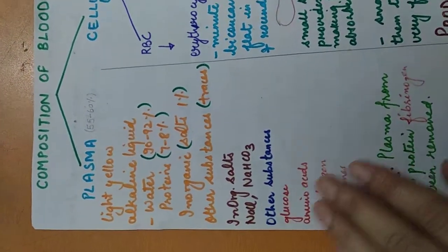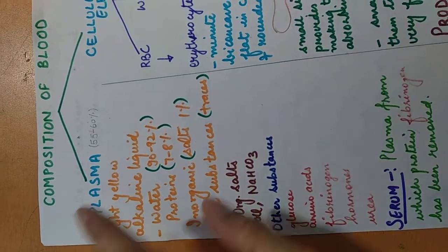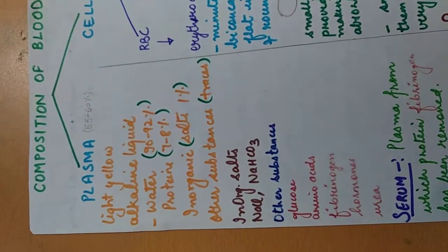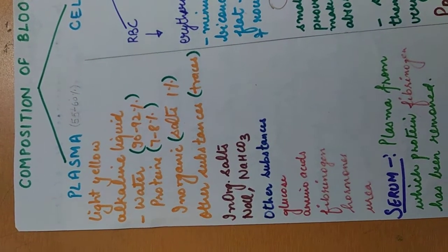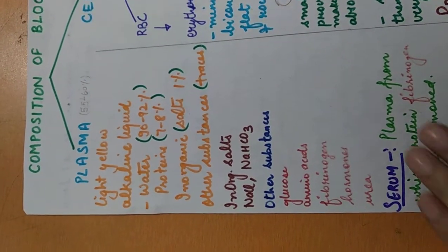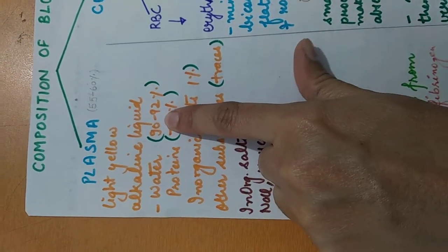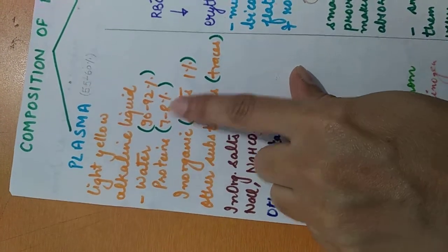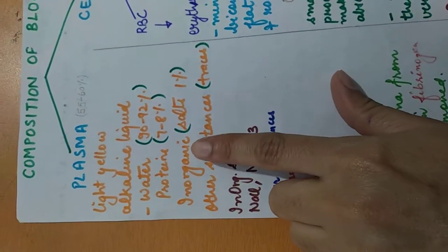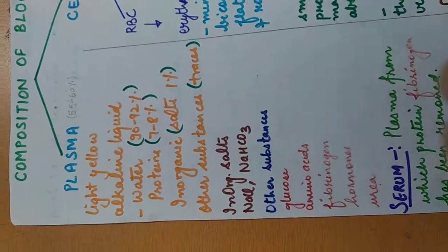We will read about plasma first. Plasma is the fluid part of the blood which constitutes around 55 to 60% of blood. It is light yellow in color and it is an alkaline fluid. It is composed of water around 90 to 92%, proteins around 7 to 8%, inorganic salts around 1%, and other substances in traces.